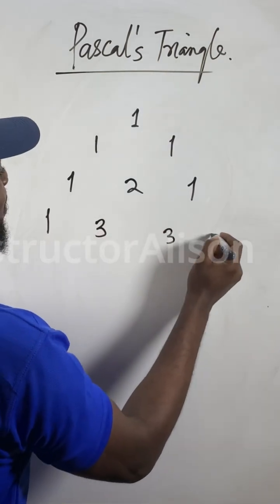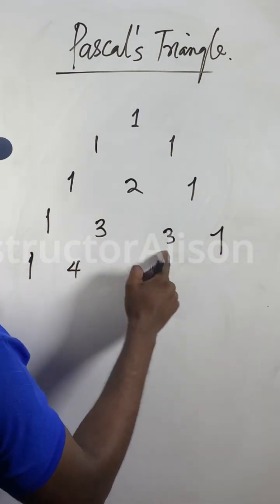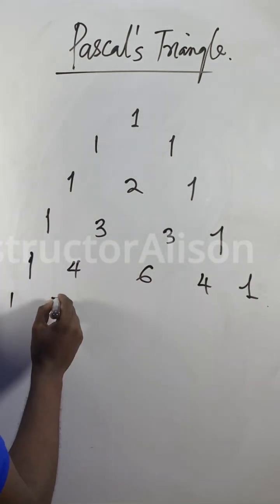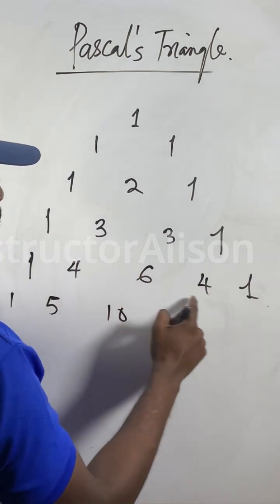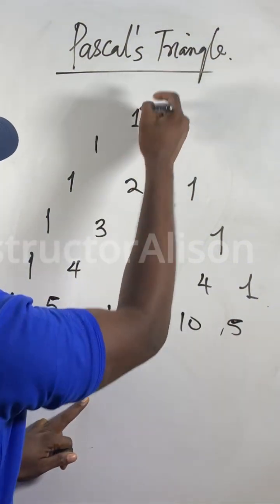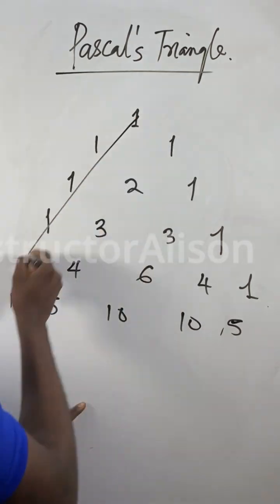1 plus 2 can give you 3, can get another 1. Then 1 can give you 4, this one can give you 6, can give you 4 again, can end at 1. Then 1 can give you 5, this one can give you 10, this one can give you another 10. So I can give you five. All these things, this is Pascal's Triangle.